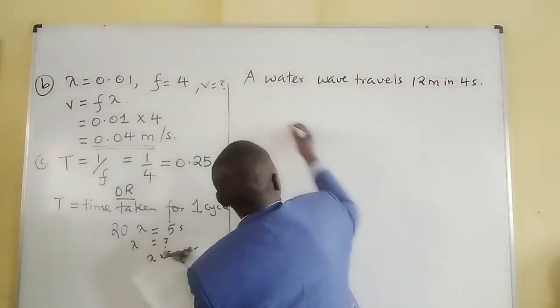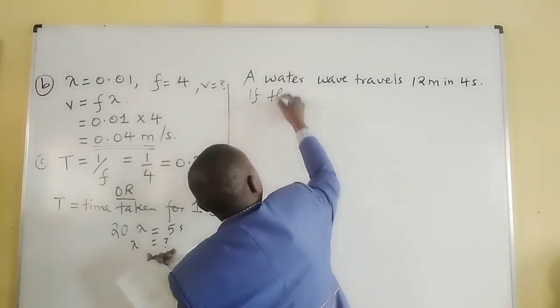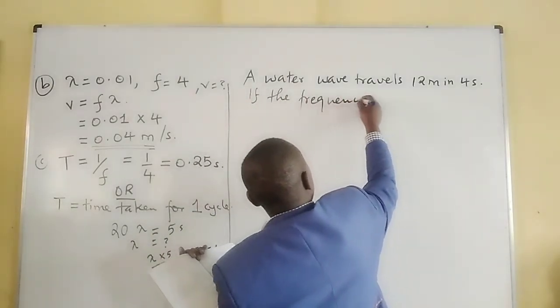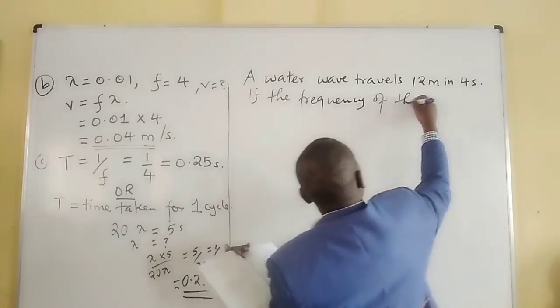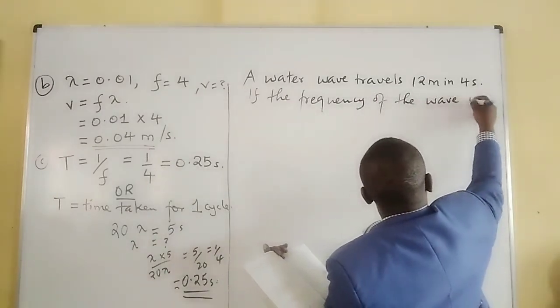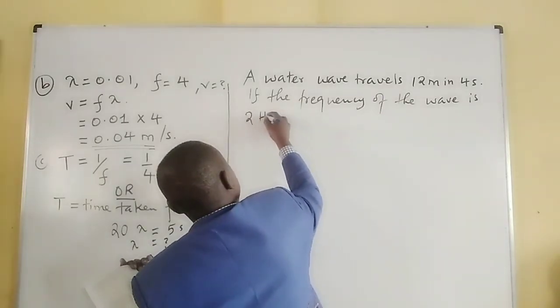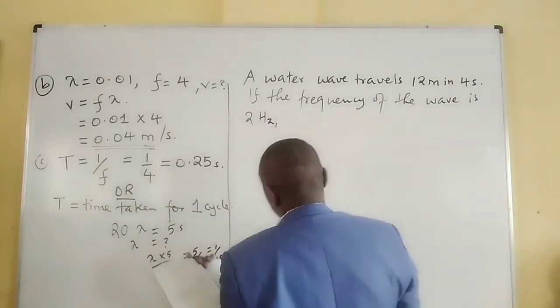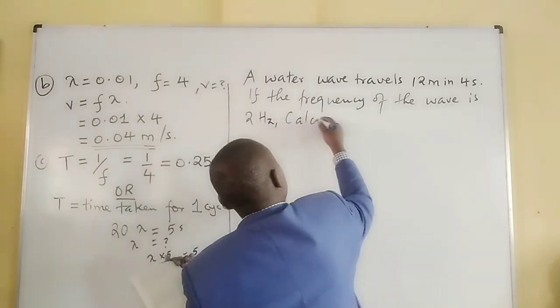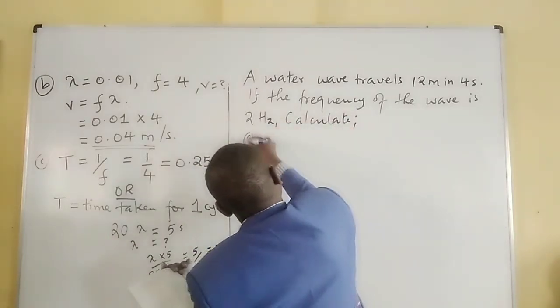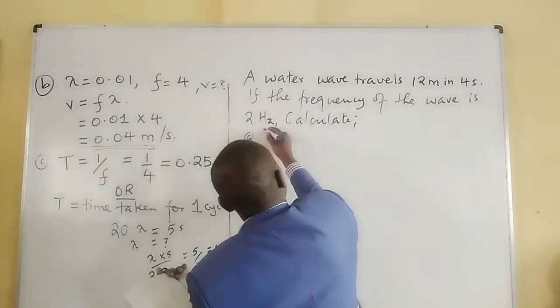If the frequency of the wave is 2 hertz, calculate Part A: the speed of the wave.